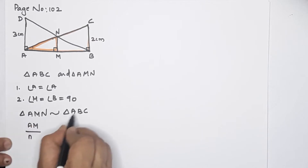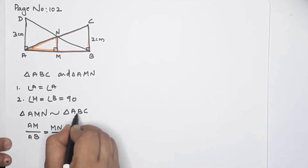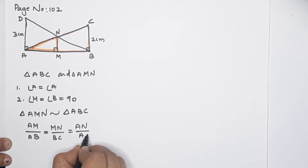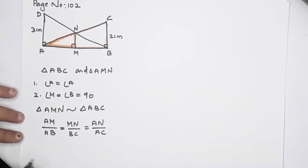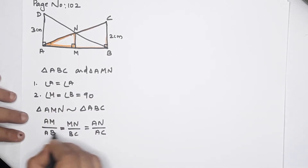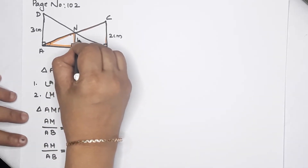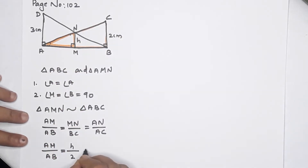AM by AB is equal to MN by BC, which is equal to AN by AC. This gives us the sides proportional. Here BC is 2, so AM by AB equals MN by H, then H by BC is 2. This is equation number 1.